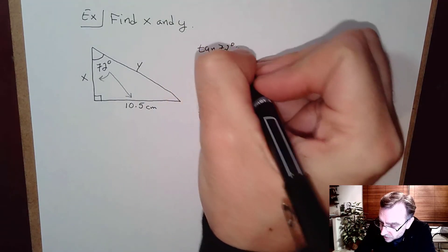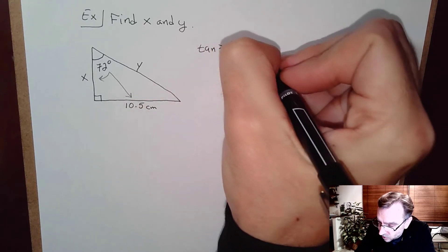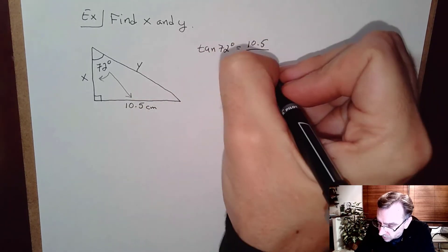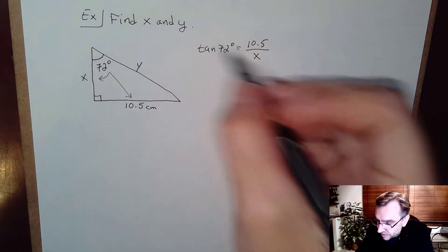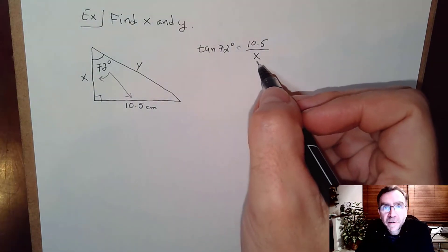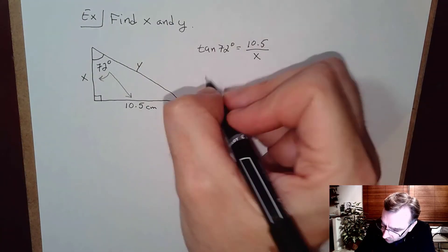And so I can write tangent of 72 degrees is equal to 10.5 centimeters over x, right. Now once I have that set up I need to solve then for x using algebra. I'm going to cross multiply.